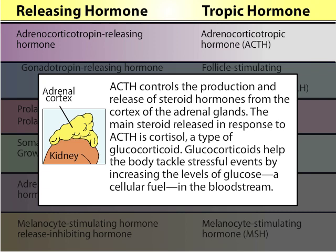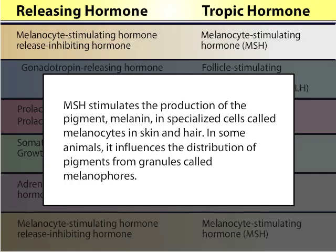ACTH controls the production and release of steroid hormones from the cortex of the adrenal glands. The main steroid released in response to ACTH is cortisol, a type of glucocorticoid. Glucocorticoids help the body tackle stressful events by increasing the levels of glucose — a cellular fuel — in the bloodstream. MSH stimulates the production of the pigment melanin in specialized cells called melanocytes in skin and hair. In some animals, it influences the distribution of pigments from granules called melanophores.